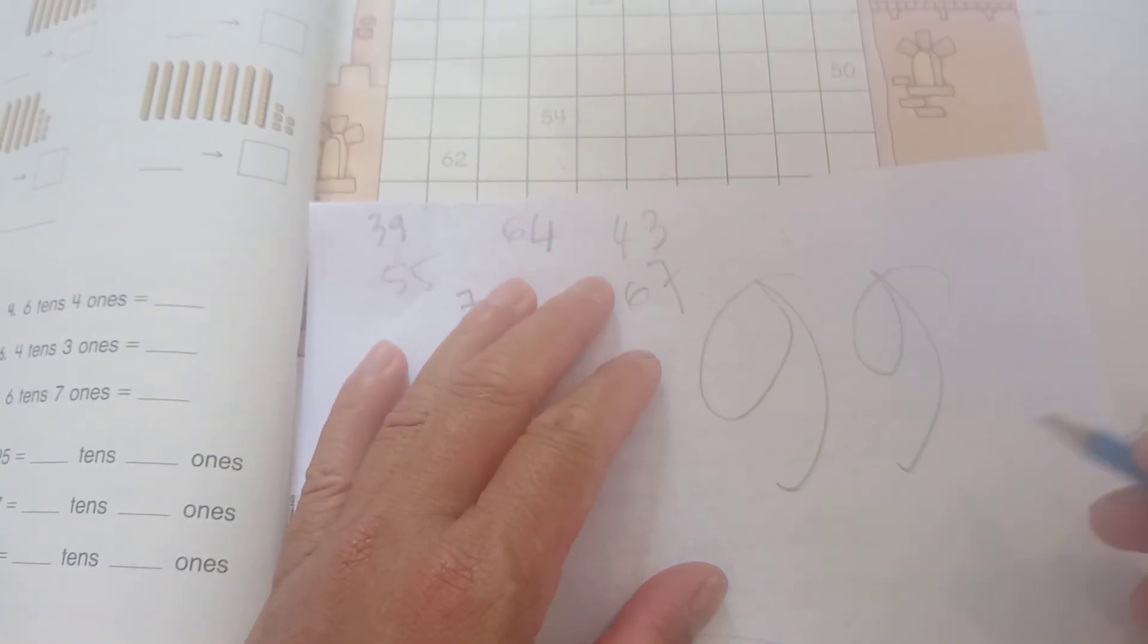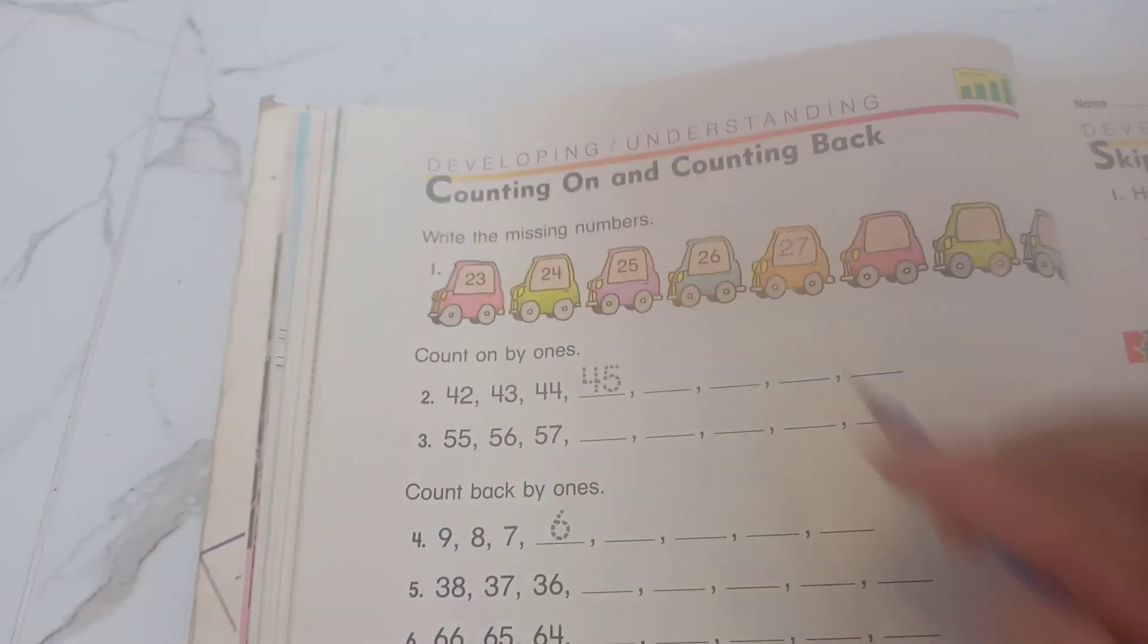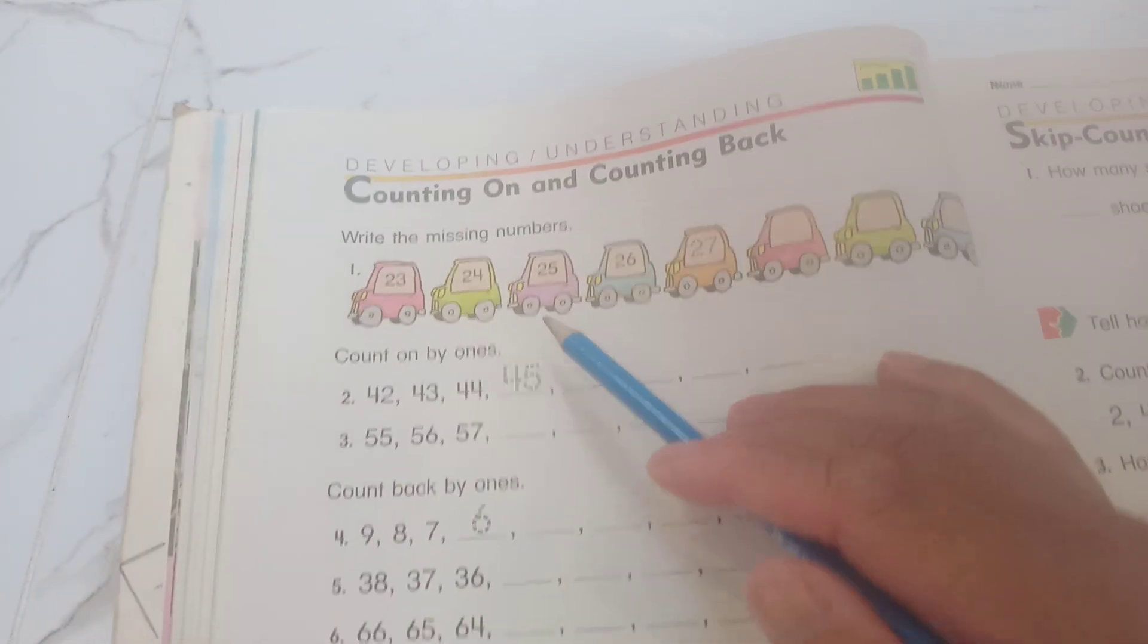Okay, alright. So now go to the next page, page 60. You can see page 60. Developing understanding, counting on and counting back.